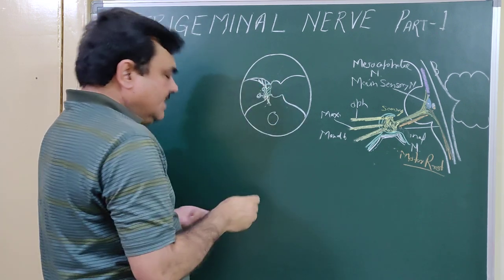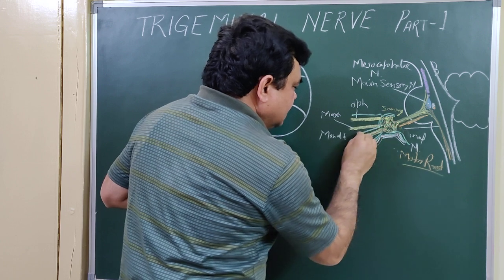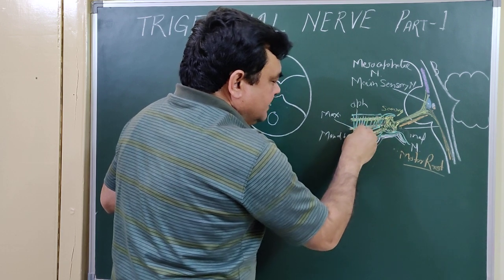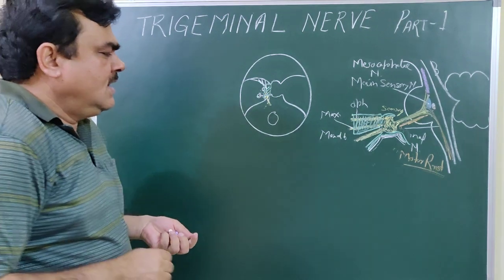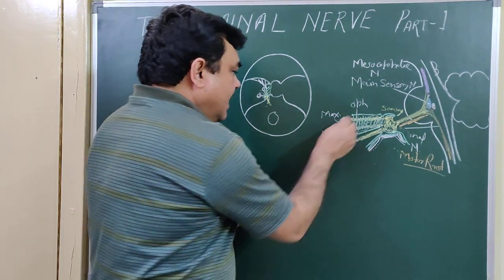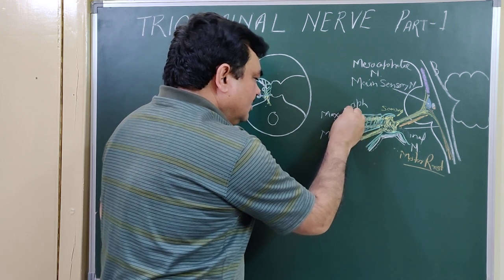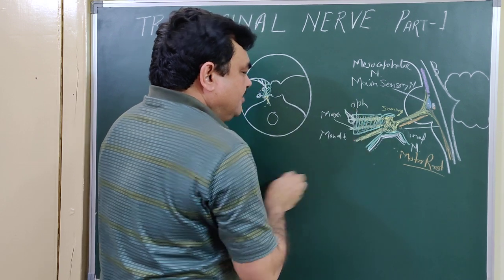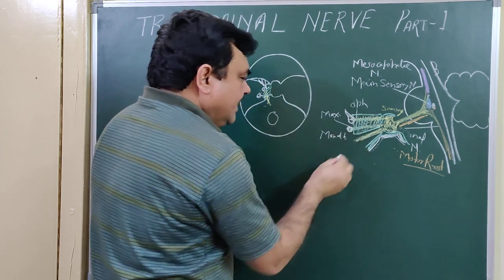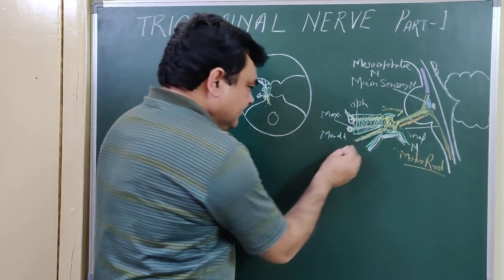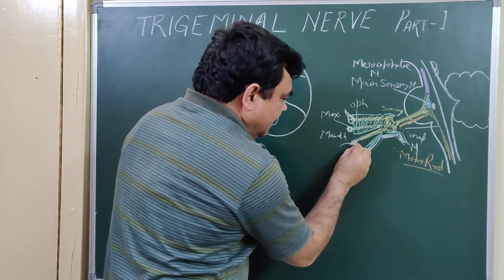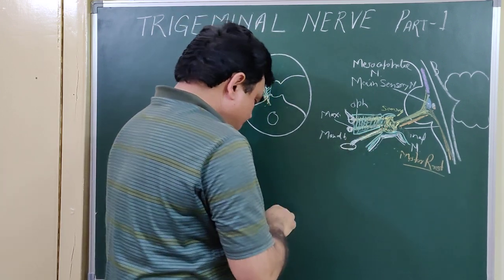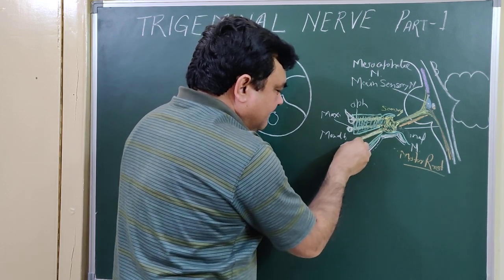The ophthalmic and maxillary divisions lie on the lateral wall of the cavernous sinus. The ophthalmic division passes through the superior orbital fissure, the maxillary division passes through foramen rotundum, and the mandibular division passes through foramen ovale. This is the mandibular division of the Trigeminal nerve passing through foramen ovale.